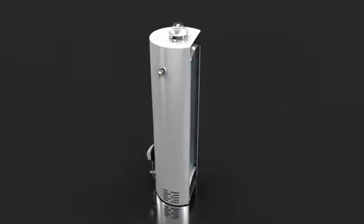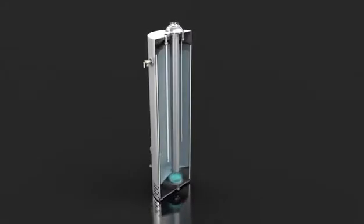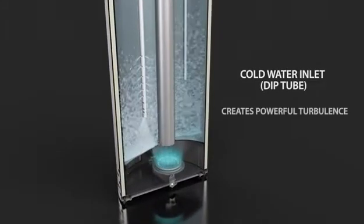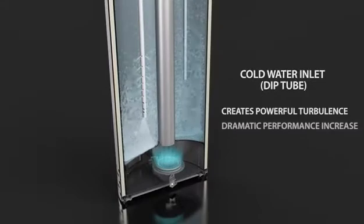The HydroJet changes the way water enters your water heater tank. It is a radically different, highly modified cold water inlet, or dip tube. Instead of water entering the tank in a smooth, undisturbed manner, the HydroJet gives the water powerful turbulence and force. The effect on the water heater's overall performance is dramatic.